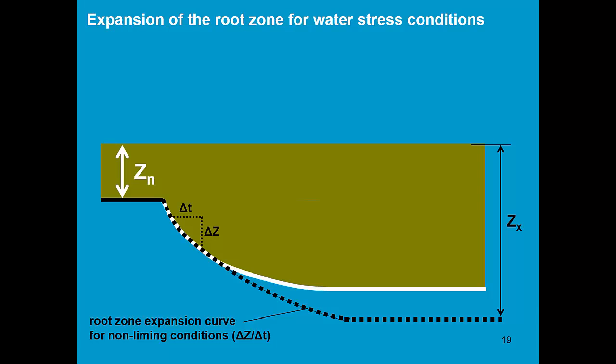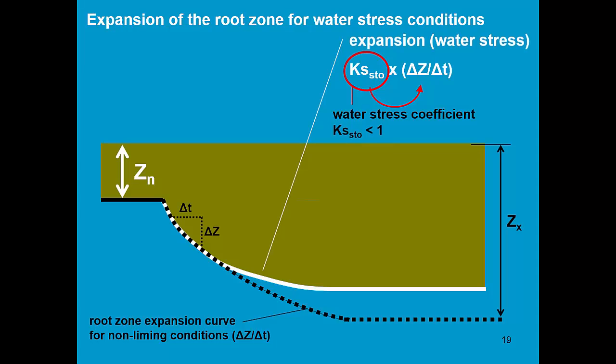In this slide, we see the expansion of the root zone for water stress conditions. Water stress will affect the root zone expansion if it starts closing the stomata. As such, less CO2 can be taken up and less root mass can be developed. So a slight water stress might affect the leaf expansion but will not affect the root zone expansion, so the shoot-root ratio will change. It is only when water stress starts to affect stomatal closure that the root zone expansion will slow down, and the maximum rooting depth might be less than the rooting depth which was assumed in the crop file.